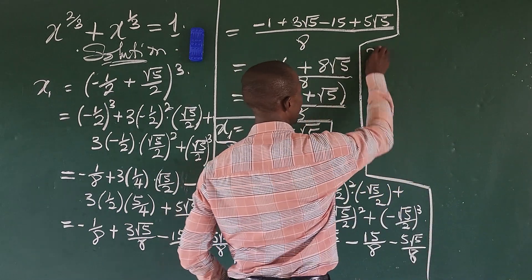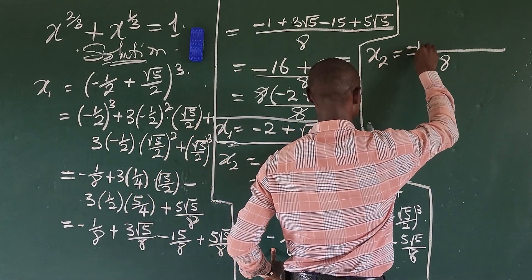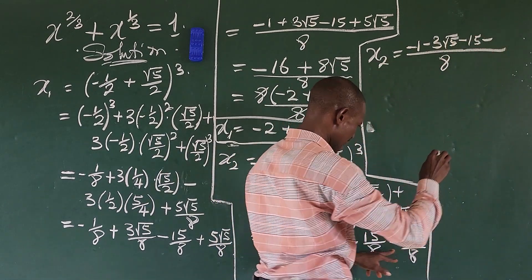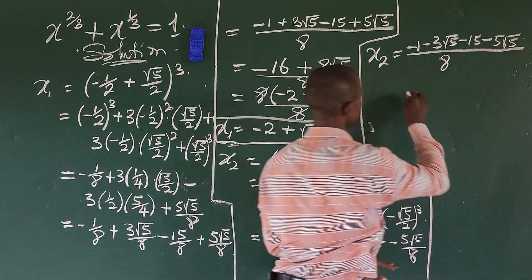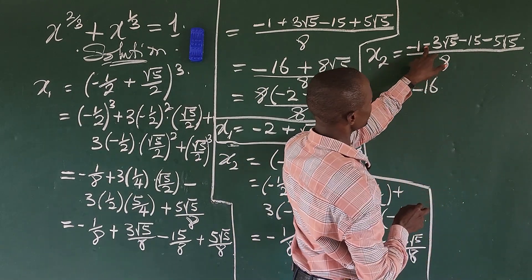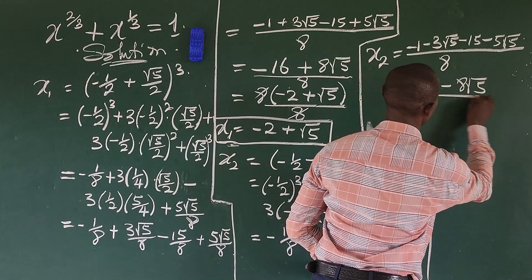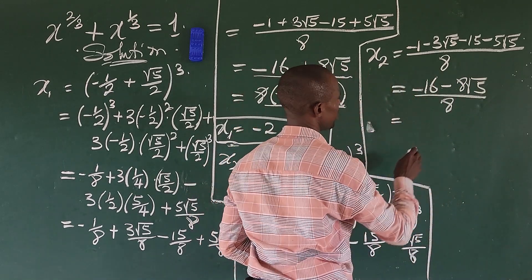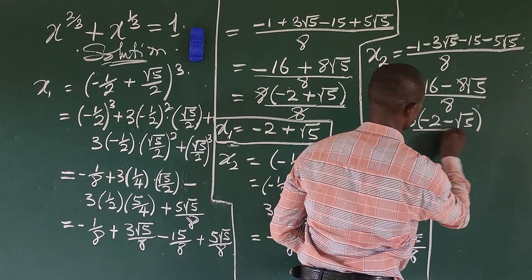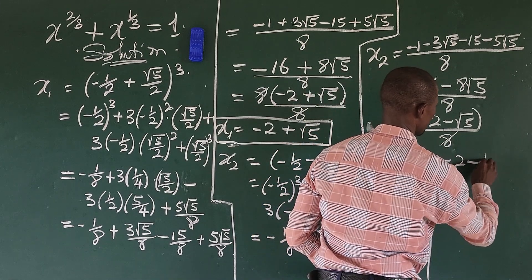Taking the LCM of eight, the numerator is: negative one, minus three root five, minus fifteen, minus five root five. Combining: negative one minus fifteen gives negative sixteen; negative three root five minus five root five gives negative eight root five. Factoring out eight gives eight times the quantity negative two minus root five, all over eight. So x2 equals negative two minus root five.